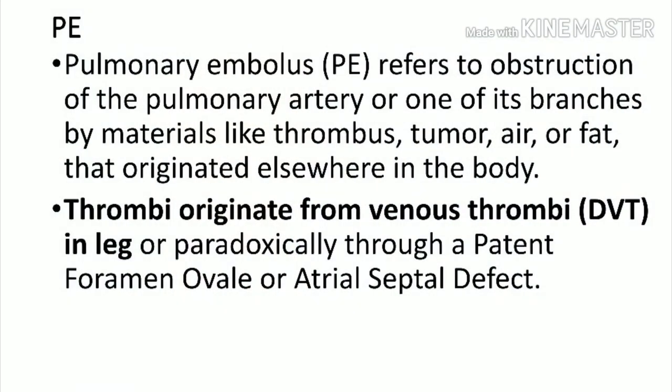Welcome to AETCM, the emergency medicine channel. Today we will discuss pulmonary embolism. Pulmonary embolism means obstruction of the pulmonary artery or its branches because of thrombus, tumor, air, or fat. The emboli normally originates from DVT of the leg, and very rarely it can present from other sources through a patent foramen ovale or atrial septal defect. In a normal course, thrombi develop in deep veins in the lower limbs, ascend, and block the pulmonary circulation.